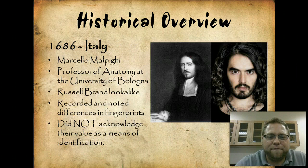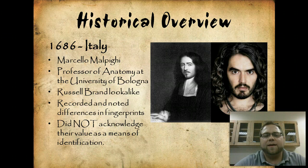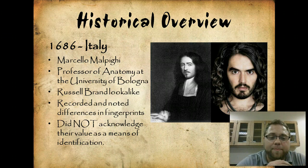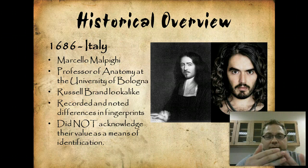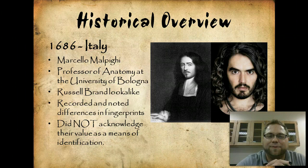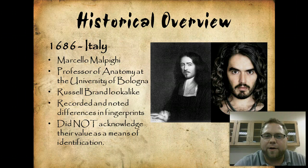Going ahead 400 more years, we have Marcello Malpighi — my Italian is a little rusty. He was a professor of anatomy at the University of Bologna, and he looks a little bit like Russell Brand. Being a professor of anatomy, he recorded all of the differences between fingerprints — all the different ways that fingerprints kind of form and shape. However, in a wonderful blunder, he did not acknowledge that they're used for identification. But he was one of the first ones to really map out and give a lot of information about the differences of fingerprints.